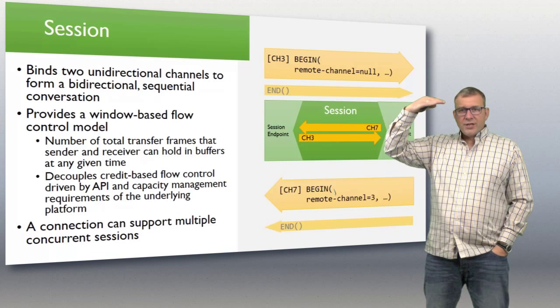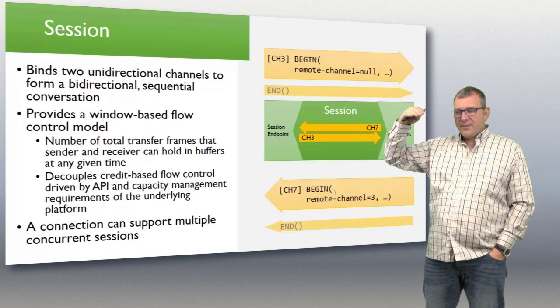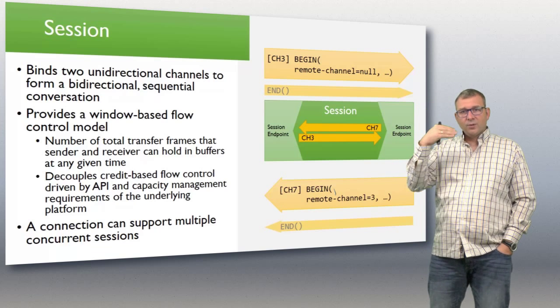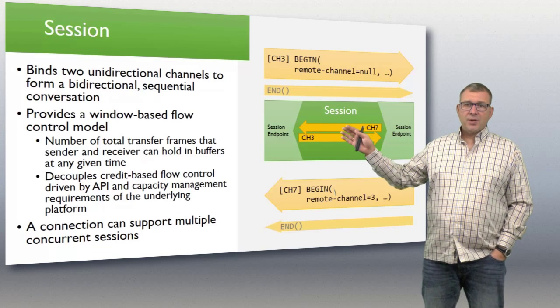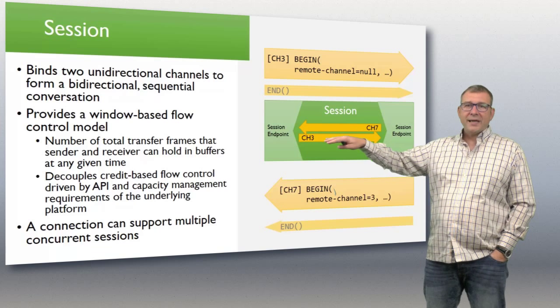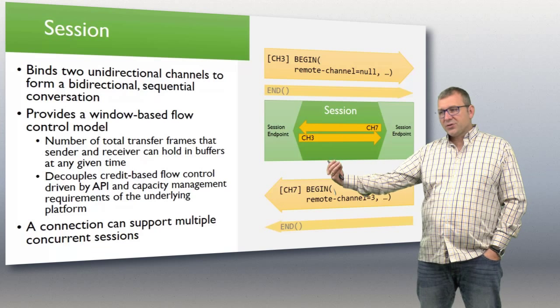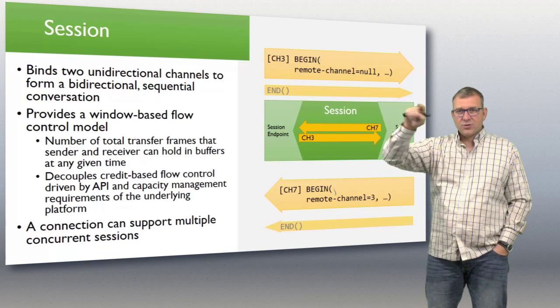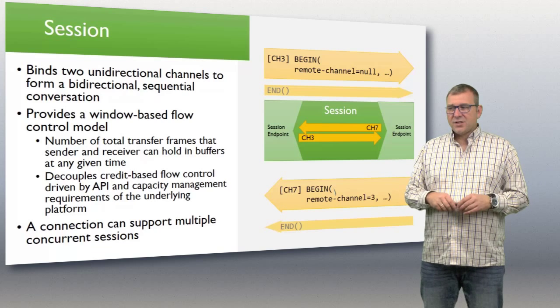A session. So now we have a connection. The session is opened using a begin frame. The begin frame is sent on a channel. It picks a channel that it has available, the sender, and then begins the communication. It says the remote channel here is null, so it's not prescriptive about that. It tells the other party to pick one. The other party responds to this by also saying begin. And it says, I'm responding to you over there to your channel three with my channel seven. That's how that session is formed. The session is a bi-directional thing.